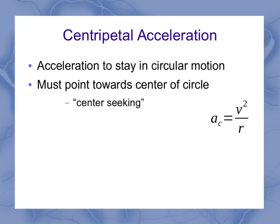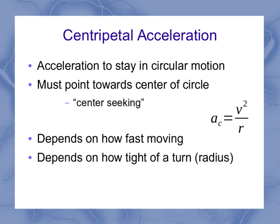The equation that we ended up deriving for this in the previous video was AC, the centripetal acceleration, equal to V squared over R, where it depended on how fast it was moving, the V, and how tight of a turn it was, the radius.